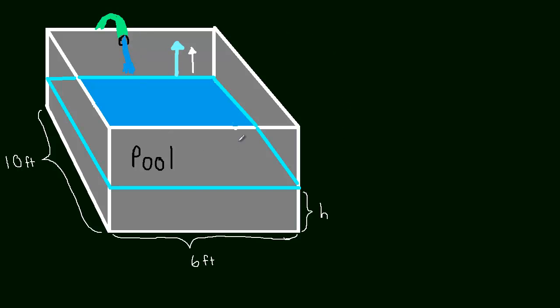So in this example, this will be the first one we do. We're going to have a pool that's being filled up with a hose here and the water level is rising. So the water level is going to rise at a certain rate. It might rise a few inches per hour or something like that.